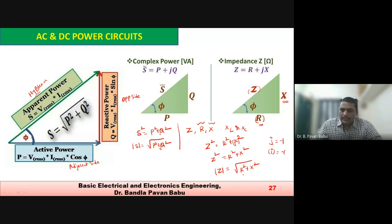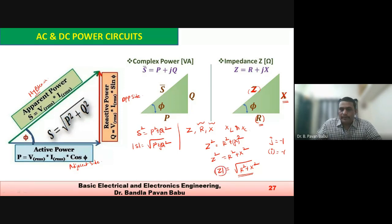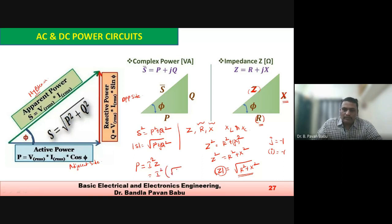So impedance is the combination of real elements and reactive elements. From this we can identify the magnitude. The power absorbed by the impedance is I²Z, and we can substitute Z = √(R² + X²).